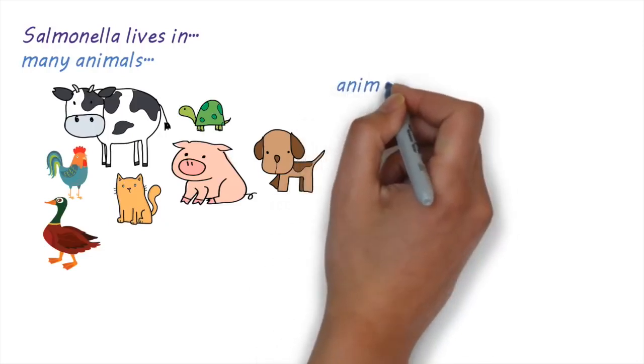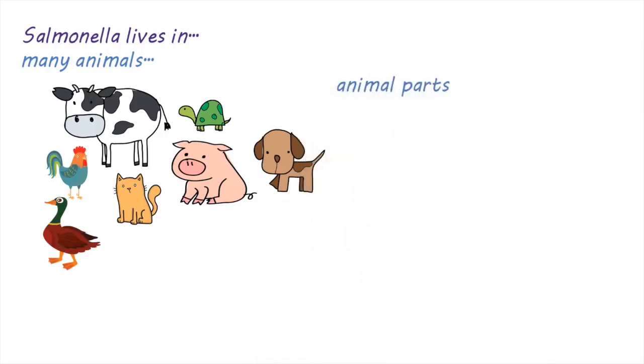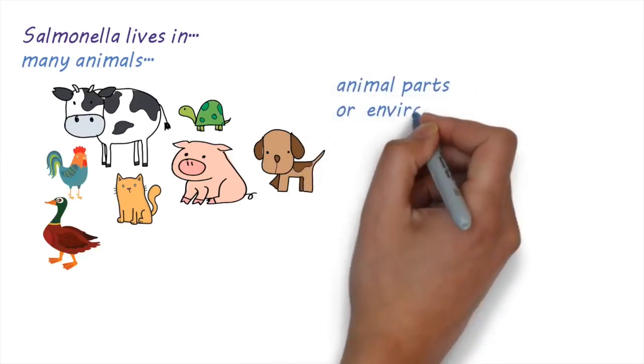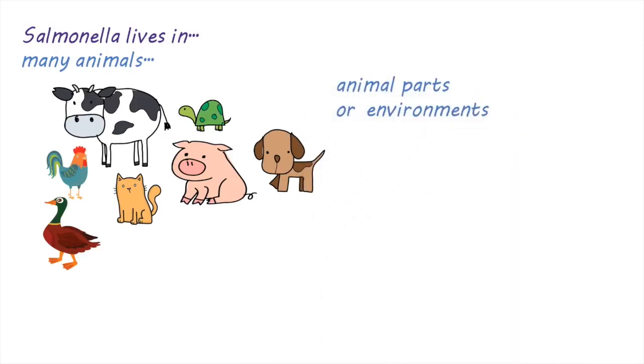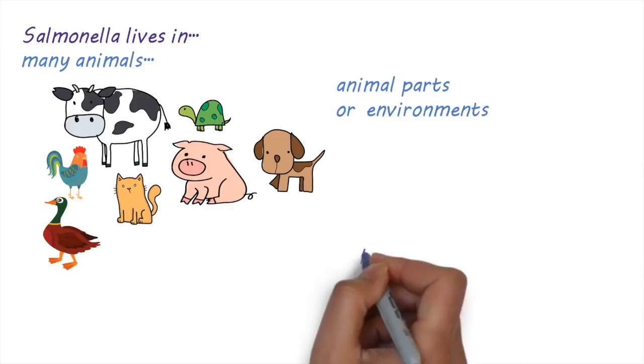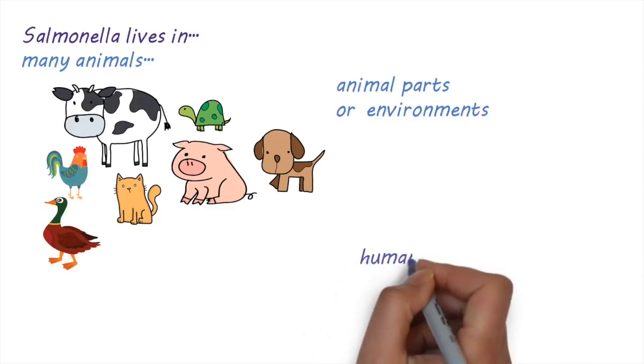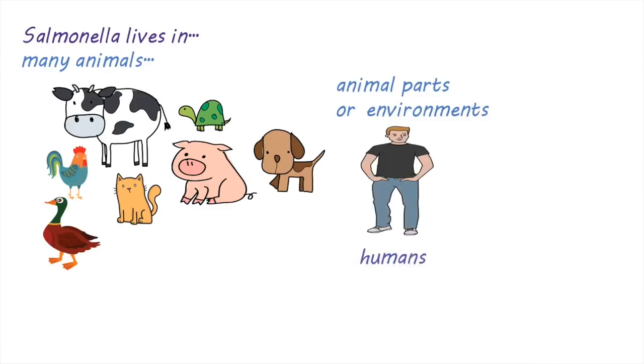Other parts of the animals like feathers or fur, or the places they live in, can be contaminated by the bacteria. Some types of Salmonella, like Salmonella typhi, live only in humans.